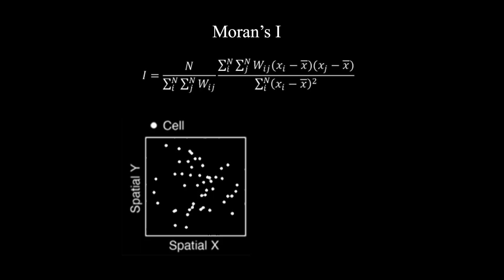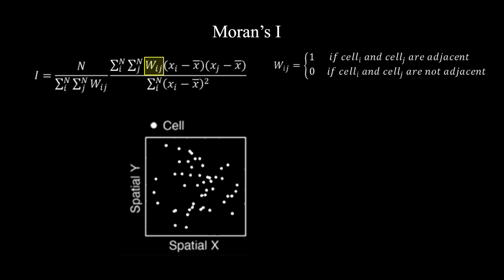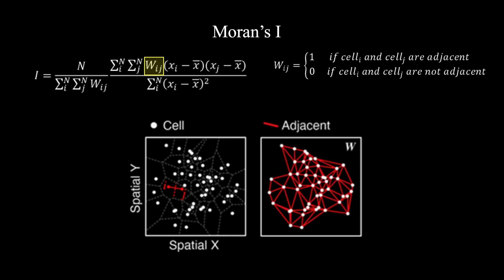Consider we have n cells, again visualized as points with spatial positions encoded as the x and y axes. Let's focus on the W_IJ adjacency weight matrix. For now, let's consider W_IJ as being equal to 1 if cell I and cell J are adjacent to each other in space, and 0 otherwise. We can algorithmically determine adjacency using a Voronoi tessellation approach and visualize these adjacency relationships with a red line in this graph representation.